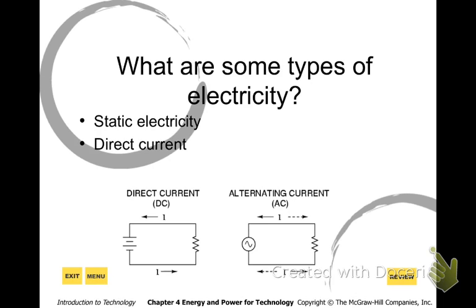Now AC current — alternating current. You've heard AC/DC; that's a band, but it came from the initials AC/DC, which stand for alternating current and direct current. With alternating current the current actually goes back and forth — it doesn't just go one direction. Why use DC over AC or AC over DC? They both do the same thing, but there are some situations where alternating current is more feasible in machines. There are benefits to each, but both are going to power your source.